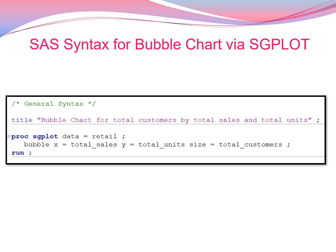This is a very basic simple syntax for bubble chart via the SGPLOT procedure. I'm giving here the title as 'Bubble Chart for Total Customers by Total Sales and Total Units.' I'll be using the procedure called SGPLOT.